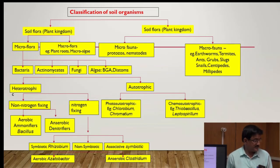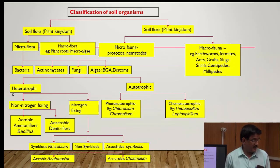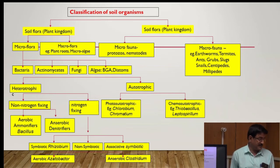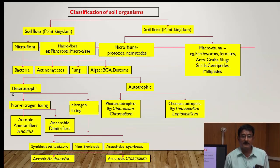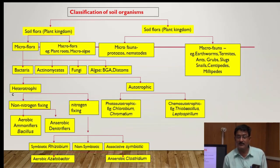Bacteria are divided into two groups: number one heterotrophic and number two autotrophic. Heterotrophic bacteria are divided into two groups: non-nitrogen-fixing and nitrogen-fixing. Non-nitrogen-fixing bacteria are divided into aerobic and anaerobic. For example, aerobic bacteria include Ammonify and Bacillus; anaerobic nitrogen-fixing bacteria include denitrifying bacteria.